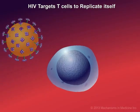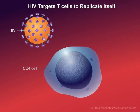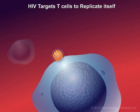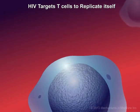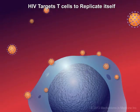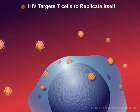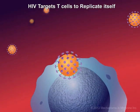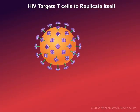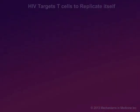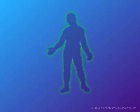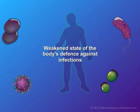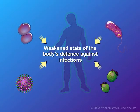When HIV infection occurs, the virus targets these cells of the immune system. The virus attaches and gains entry into the CD4 cell and replicates itself, or makes copies of itself. During this process, infected CD4 cells die, and the HIV virus seeks out other CD4 cells to infect, leaving the body in a weakened state of defense against infections.